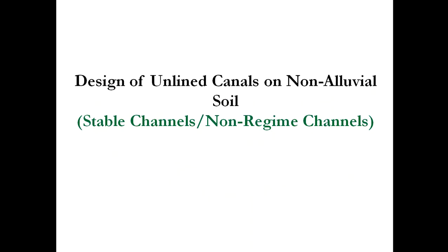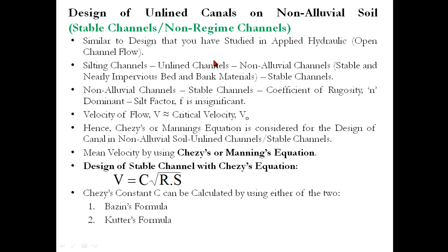So the simplest design we will look at first is the design of unlined canals on non-alluvial soil — that means non-regime canals. The transported material is alluvial but the bed is non-alluvial, so two different materials exist, confirming these as non-regime canals.